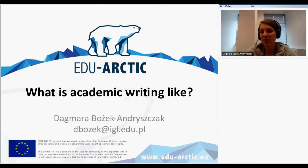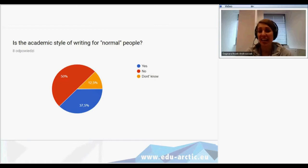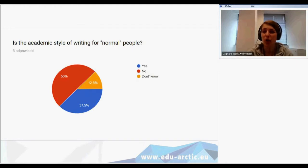We are going to start with a short review that you were invited to fill in before our classes. The question was: is the academic style of writing for normal people? As you can see, we have eight answers, which means that half of the answers are for no. It means that academic style of writing is a little bit complicated to understand for regular people, but today we will try to discuss it and show some pros and cons concerning the topic.